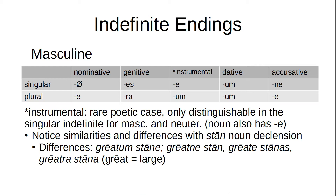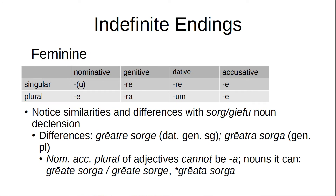Notice the similarities and differences with the Staan declension. The differences are: dative singular — Grátum staane; accusative singular — Grátne staane; nominative/accusative plural — Grátestānas; and genitive plural — Grátra staane. The word grát means 'great' as in 'large' — like 'the greatest foe I've ever encountered' or 'the great sea' or 'the great white shark.' It doesn't mean 'great' like 'fantastic' — it means 'large.'